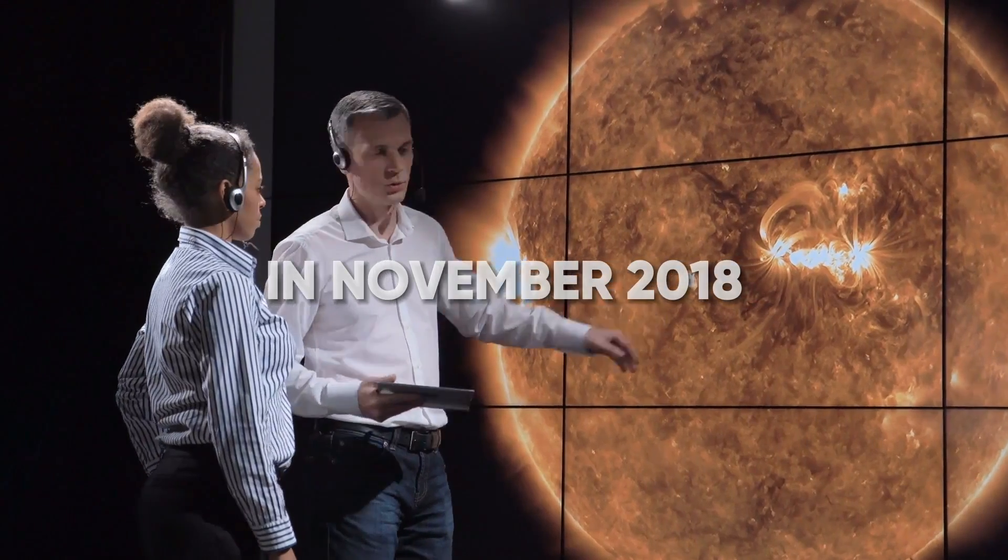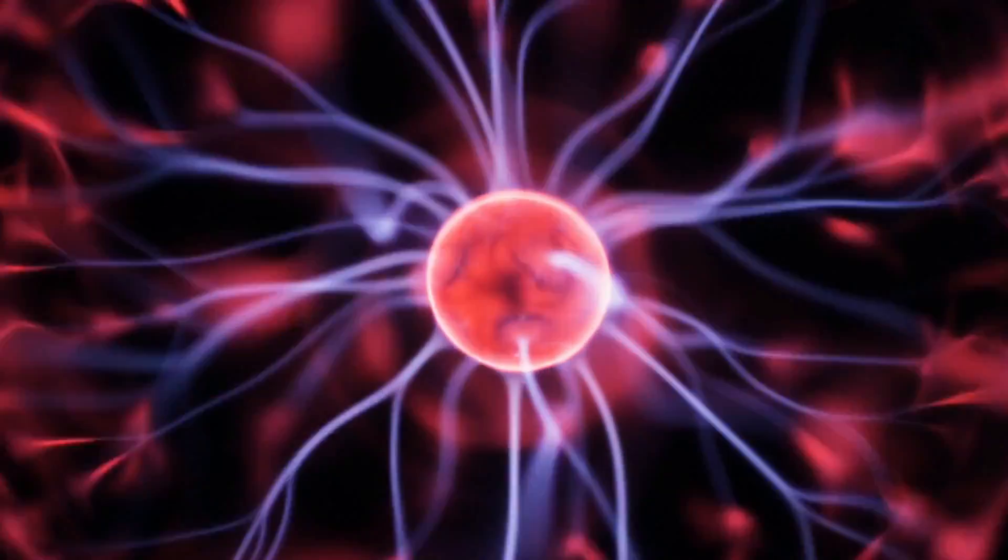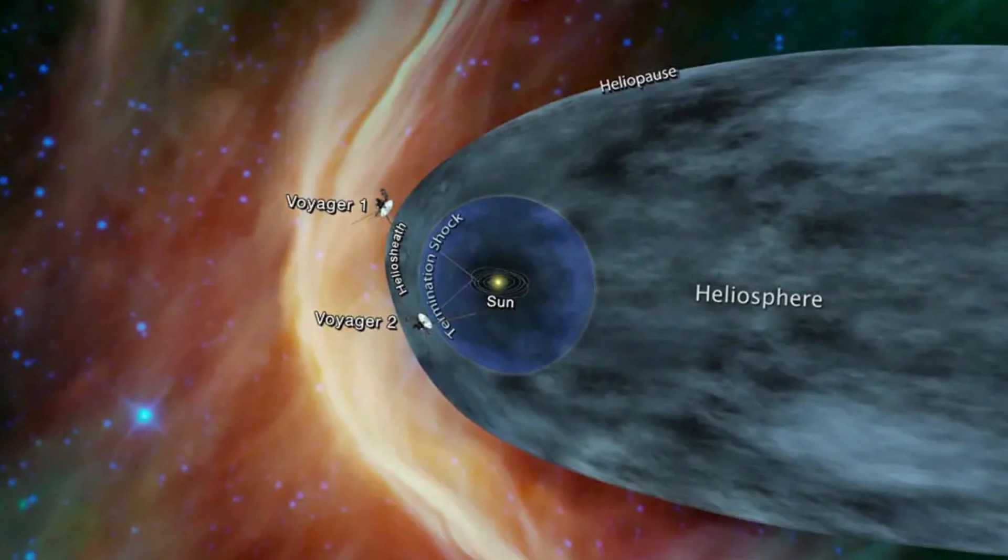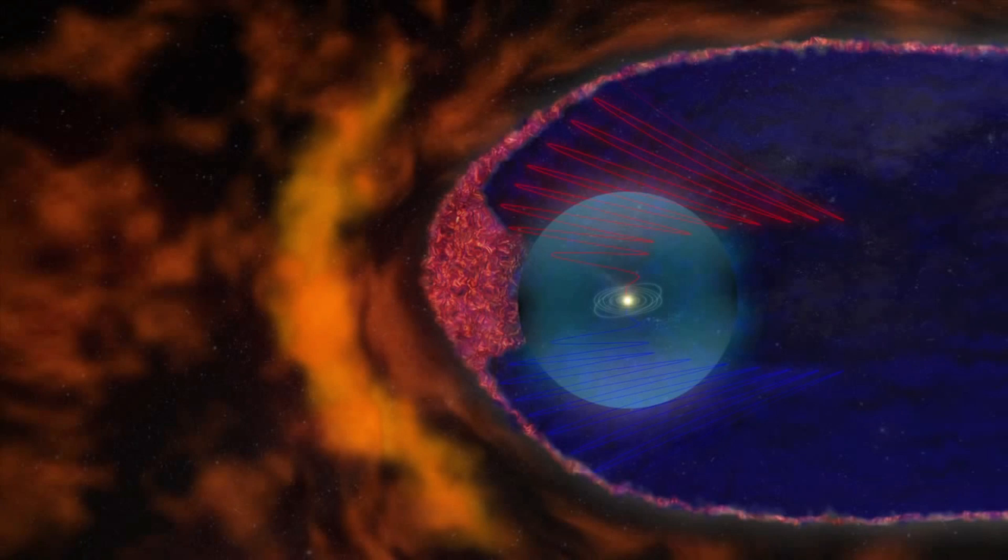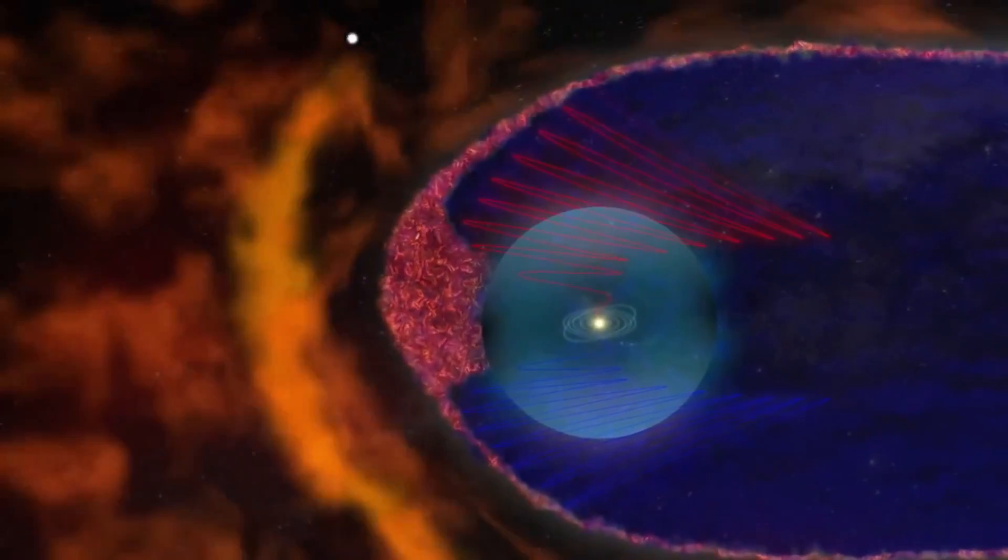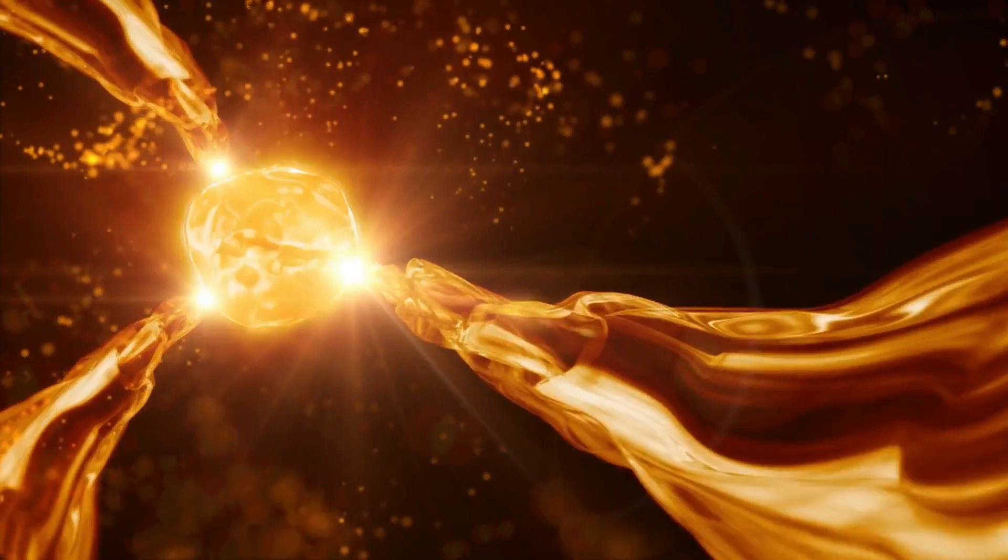In November 2018, Voyager 2 detected a sudden burst of plasma energy while traveling through the outermost layer of the heliosphere. This burst of energy lasted for just a few moments, but it was powerful enough to cause a ripple effect throughout the entire heliosphere, a vast region of space influenced by the sun's magnetic field.